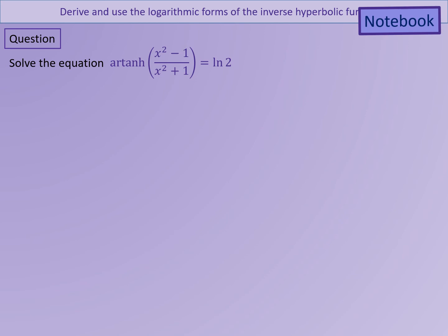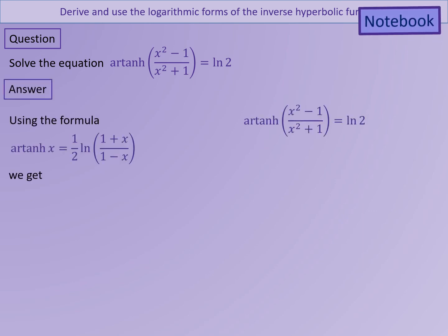We're now going to solve this equation in two different ways. First, we're going to solve it using the logarithmic form of inverse tanh of x. Then we're going to solve it by using the exponential form of tanh x. We're going to show that both of these methods lead to the same solution. We're going to start with the formula that inverse tanh of x is one half ln of 1 plus x over 1 minus x. Here we can see that we are finding inverse tanh of x squared minus 1 over x squared plus 1.